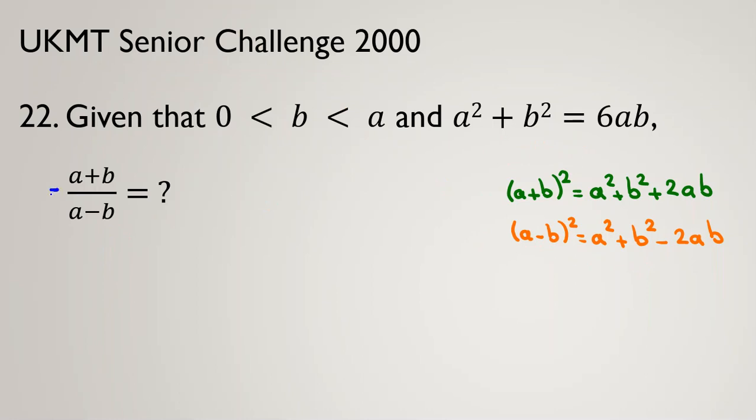If I call this fraction c, because we should consider (a+b)² and (a-b)², I consider c². So c² = [(a+b)/(a-b)]².